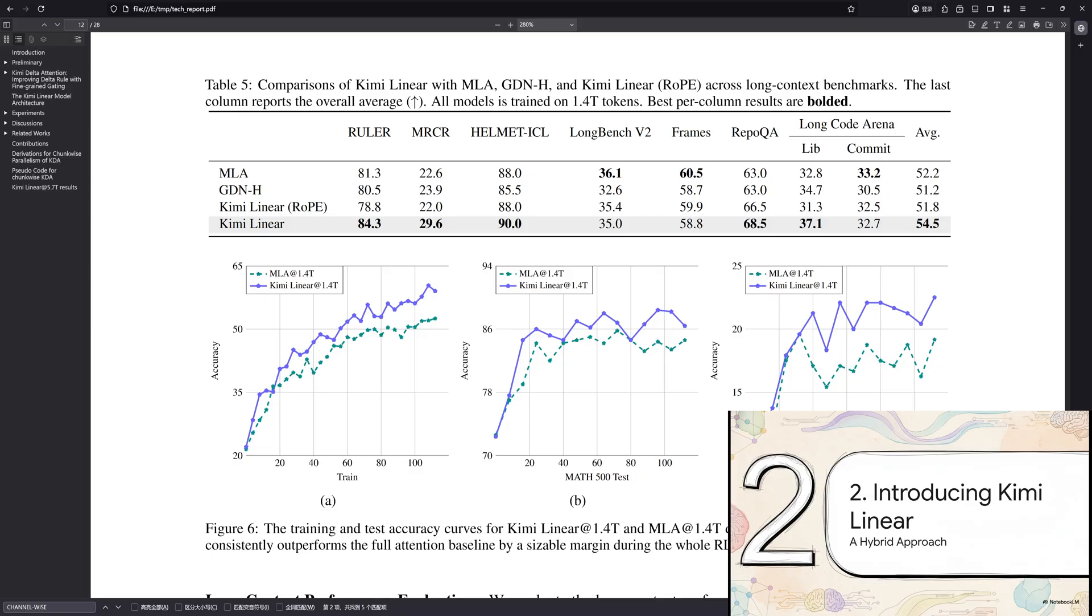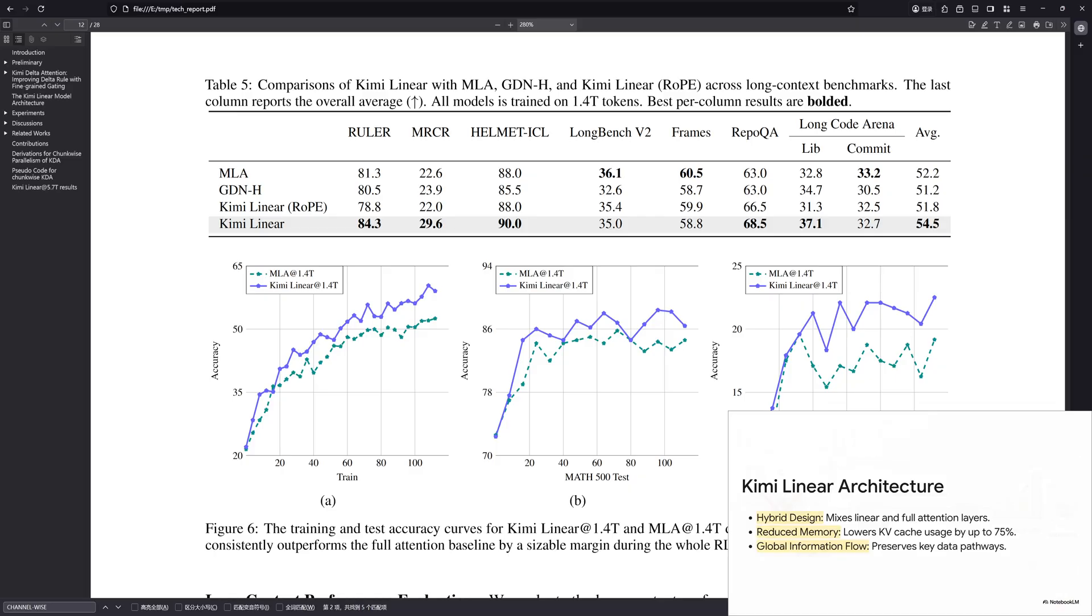And this is exactly where the Kimi team comes in with their solution, Kimi Linear. It's an architecture built from the ground up to smash through that scaling problem, but, and this is the important part, without throwing performance out the window. Now, here's what's so clever about this. Kimi Linear isn't a pure linear model. Historically, those have kind of struggled with quality. No, this is a hybrid. It masterfully mixes super-efficient linear attention layers with just a few of the old-school, powerful, full attention layers. So you get the best of both worlds. You get the speed, and you get the accuracy.